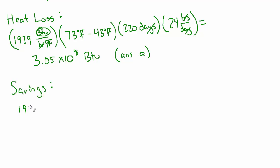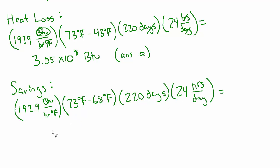So it's still 1929 BTU per hour per degree F. But now the delta T is going to be 25. So we'll say 73 degrees minus 68 degrees. This is just the savings. And the time is the same. It's still 220 days and still 24 hours per day. And that works out to 5.1 times 10 to the 7th BTUs. And that's answer B.